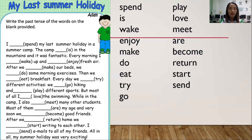Now let's move on to your paragraph. I will read the first sentence as an example: 'I blank spent my last summer holiday in a summer camp.' The word in the bracket is 'spend,' and the past tense of 'spend' is 'spent.' Let's read the sentence again with the answer: 'I spent my last summer holiday in a summer camp.'